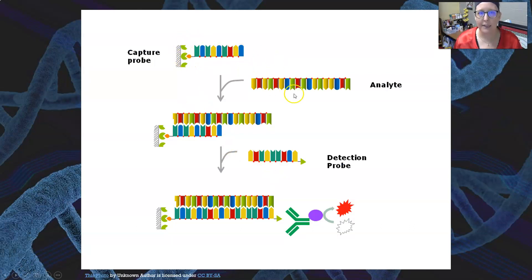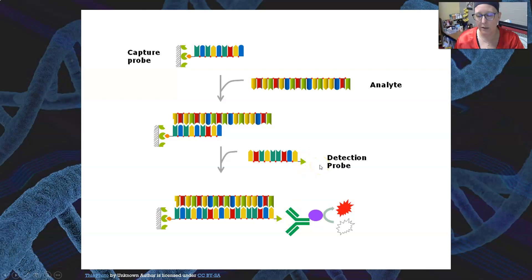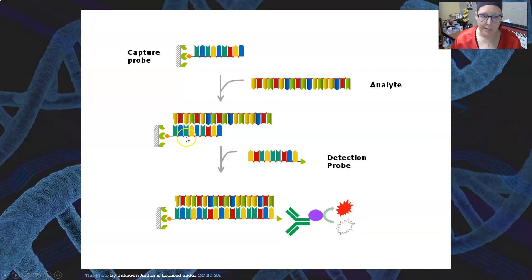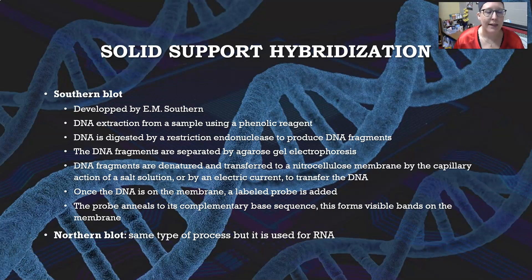In the illustration: the capture probe is on the well, the analyte of interest is incubated with it and anneals if complementary. The detection probe is then added and anneals to the remaining open sequence. Everything unhybridized is washed away, and the labeled molecule attached to the detection probe is then detected. The capture probe and detection probe are side by side — it's essentially an open-faced sandwich with the analyte lying on top.